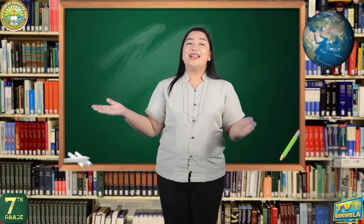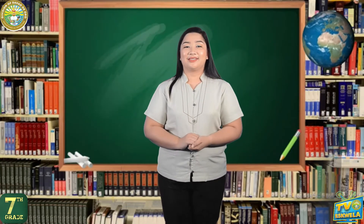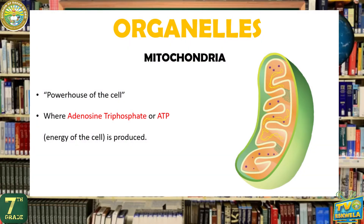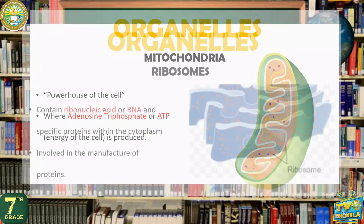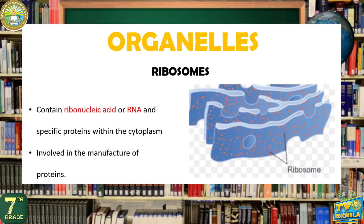Let's move on to the organelles. The first organelle we're going to discuss is the mitochondrion, or mitochondria in plural form. It is one of the largest organelles within a cell. It is also known as the powerhouse of the cell, since it is where the energy of the cell — the adenosine triphosphate or ATP — is produced. Next, we have the ribosomes. Ribosomes are tiny organelles like dots that contain ribonucleic acid or RNA and specific proteins within the cytoplasm. Within the cell, ribosomes are directly involved in the manufacture of proteins.